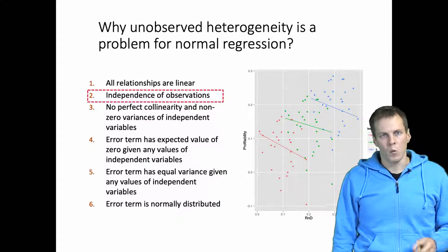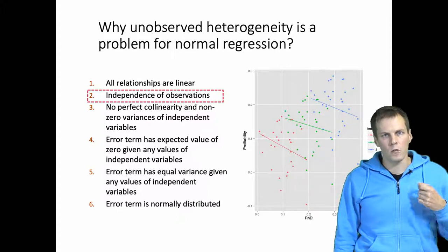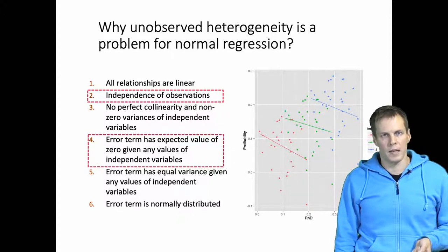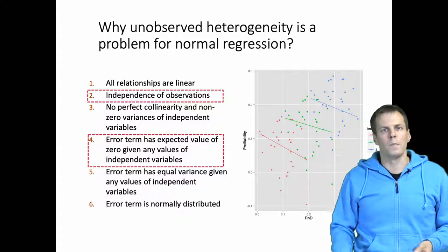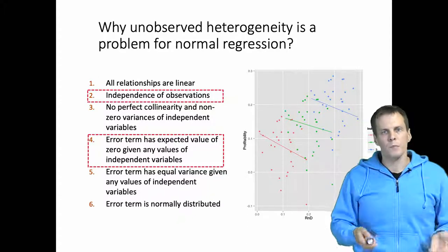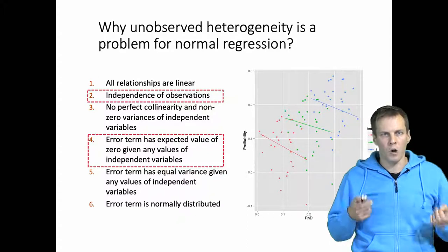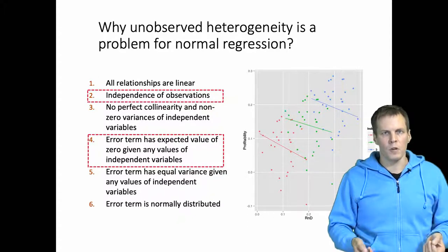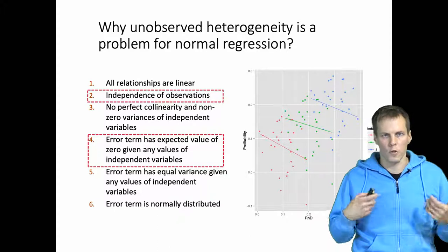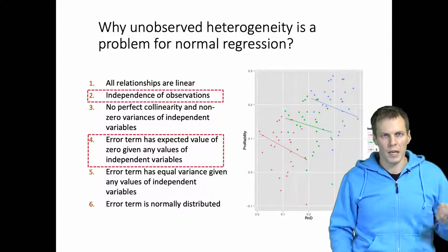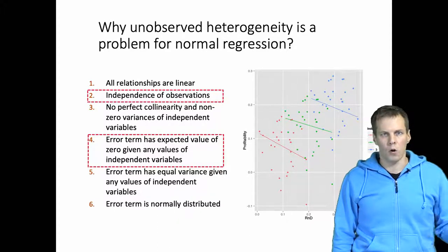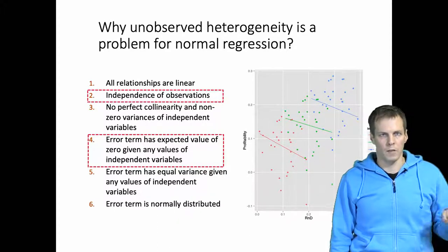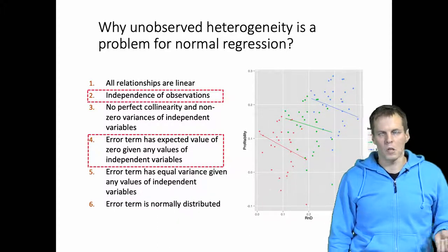We can also be in violation of the no-endogeneity assumption. This would be the case if the source of unobserved heterogeneity is correlated with any of the predictors.